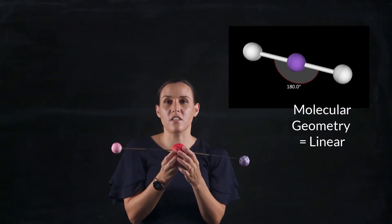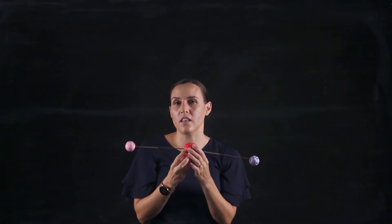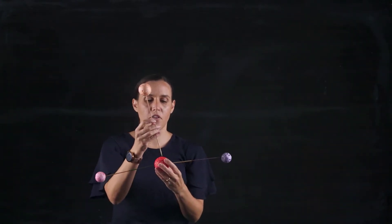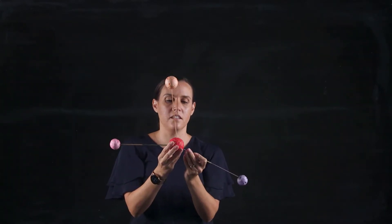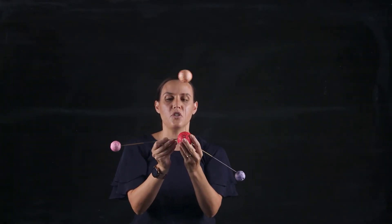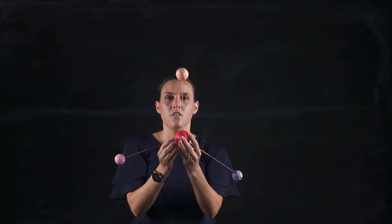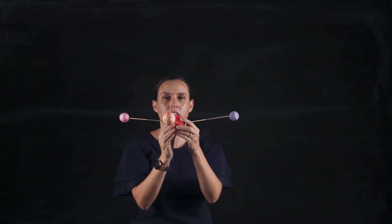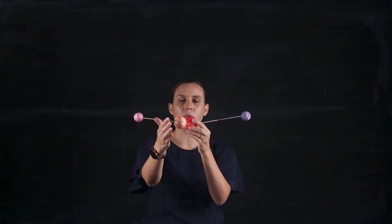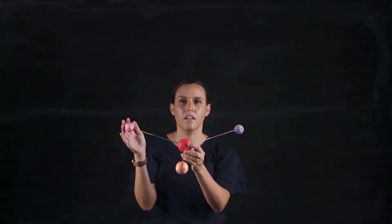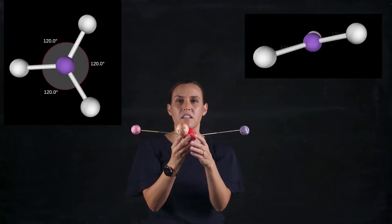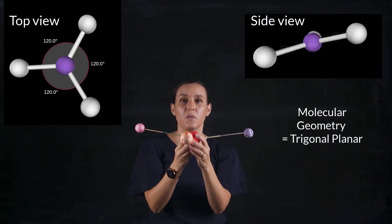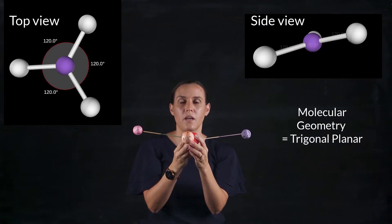Now if we were to introduce a third atom, it will change the way they arrange themselves. If we bring in our third one, it would stay on the same plane but the other two would shift slightly to allow that one to come in. We call this shape trigonal because it's got three atoms on it, and planar because it's in one plane — so it's a trigonal planar geometry.